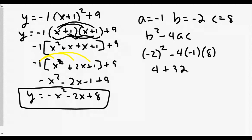Our discriminant value is 36. This makes total sense because we have a perfect square, which means our roots are going to be real, rational, and unequal.